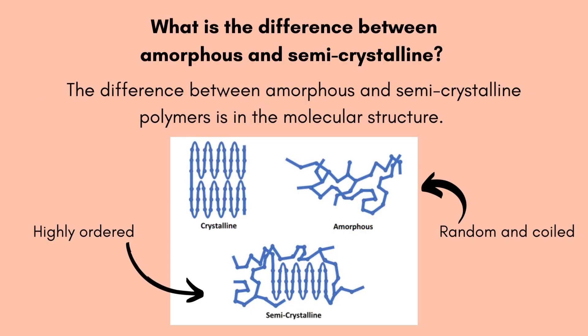What is the difference between amorphous and semi-crystalline polymers? The most considerable difference is in the molecular structure. Amorphous polymers have a seemingly random and coiled molecular structure, while semi-crystalline polymers are a type of compound with a highly ordered molecular structure.